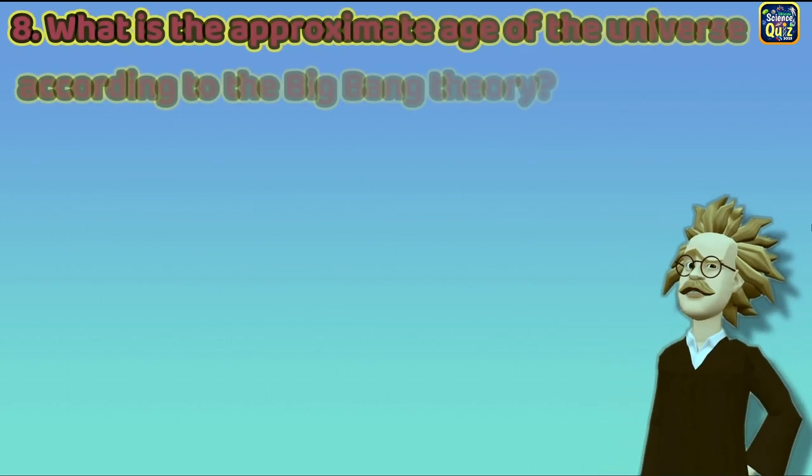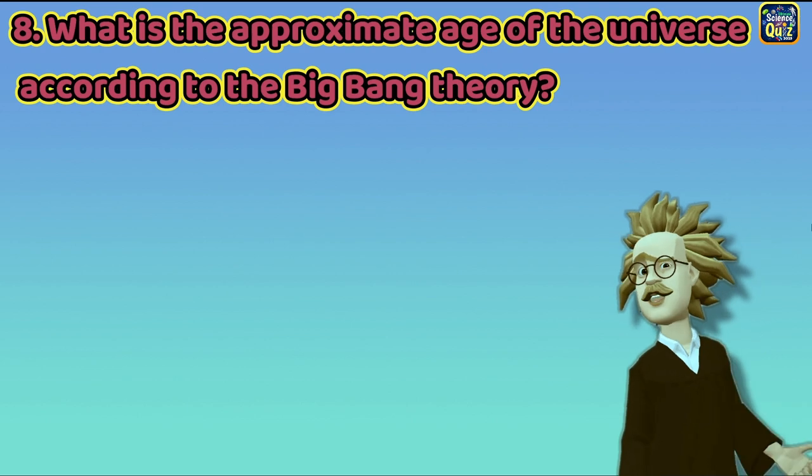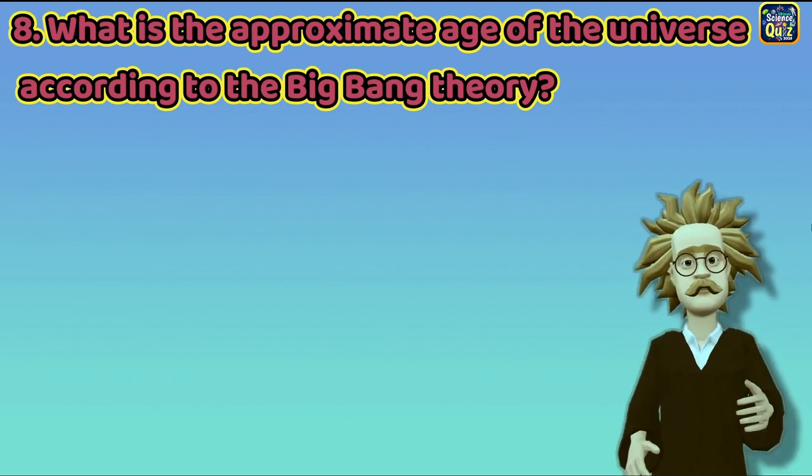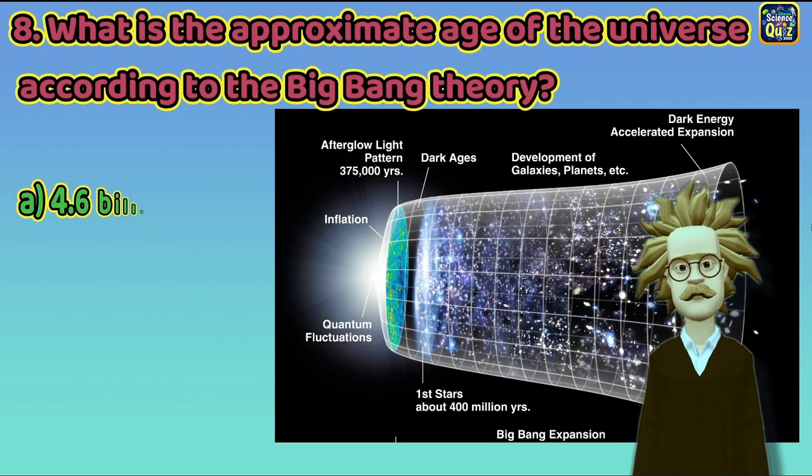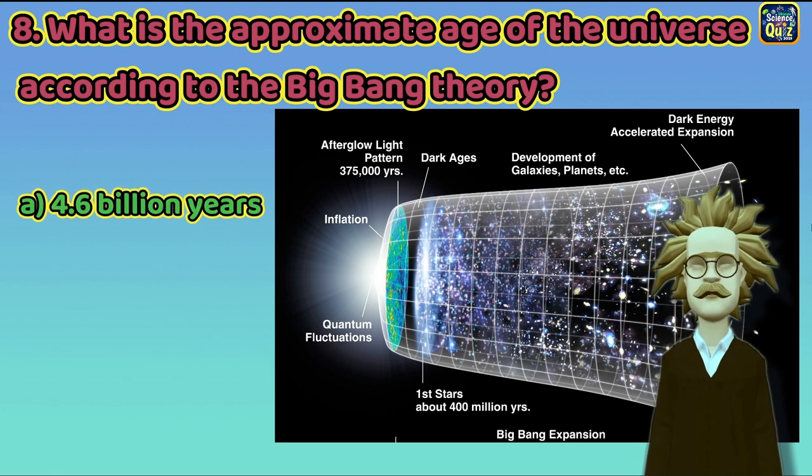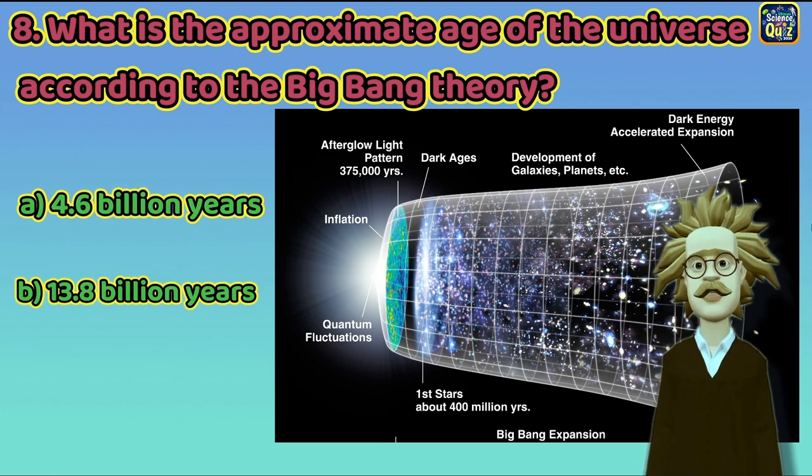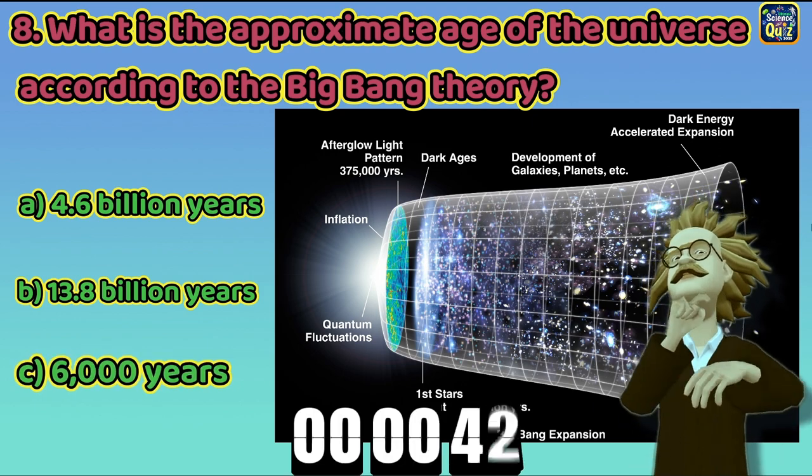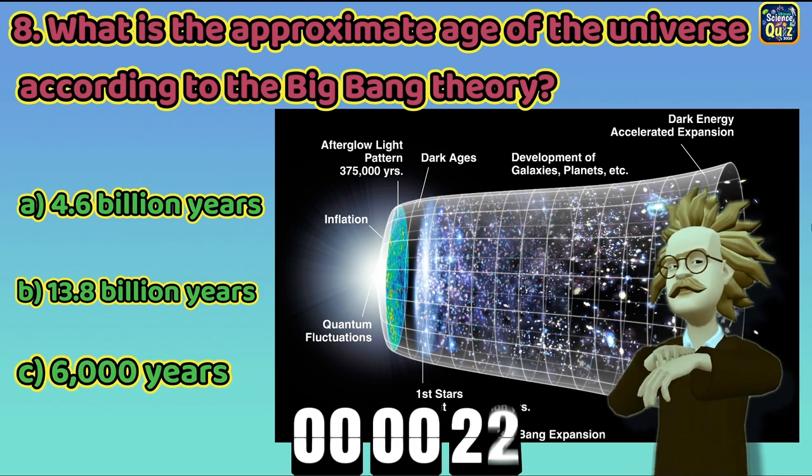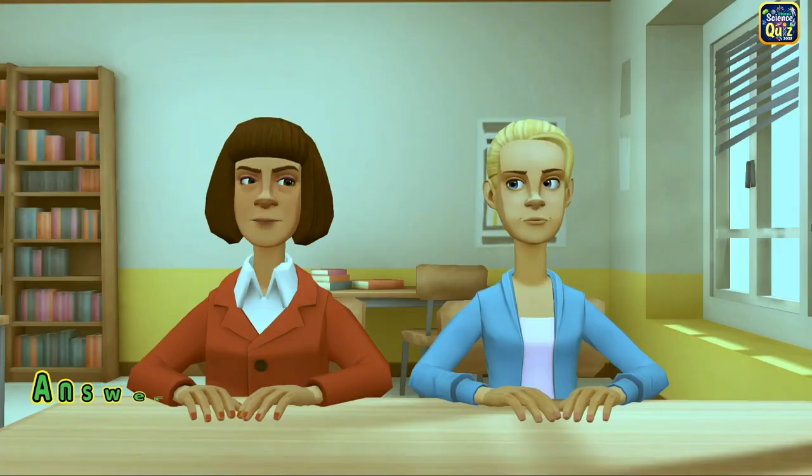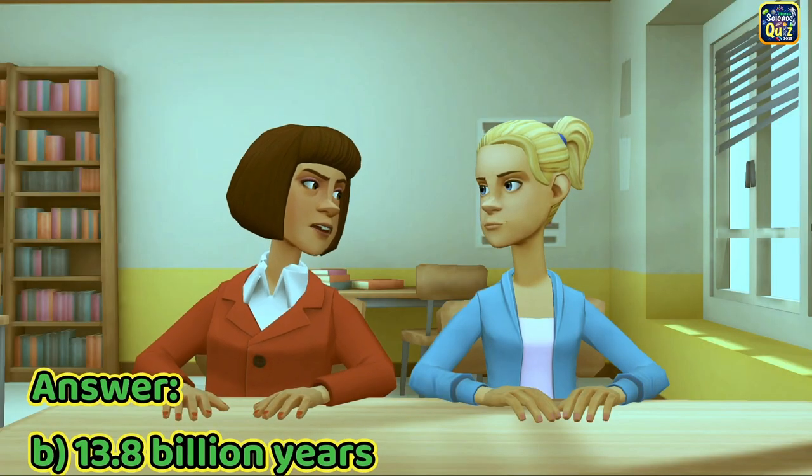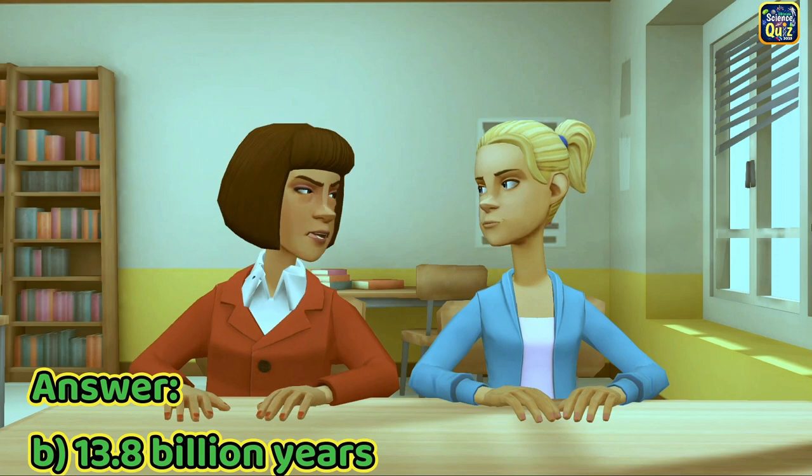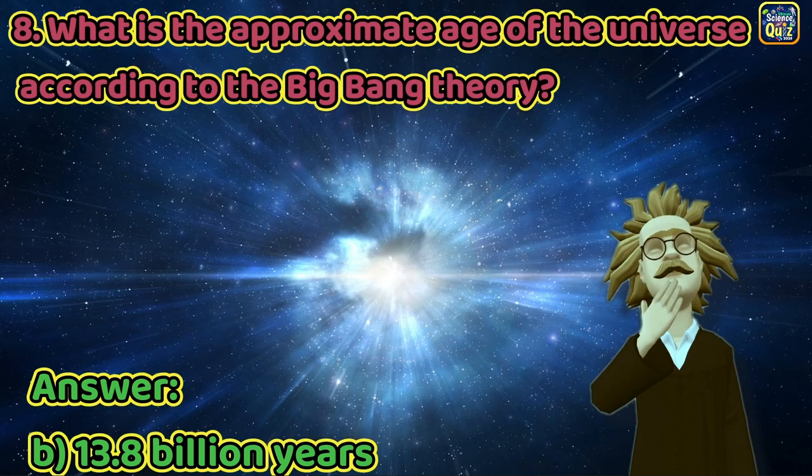Question 8: What is the approximate age of the universe according to the Big Bang theory? A. 4.6 billion years, B. 13.8 billion years, C. 6,000 years. The right answer is option B. 13.8 billion years.